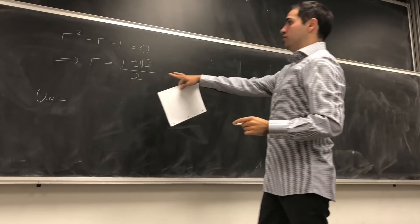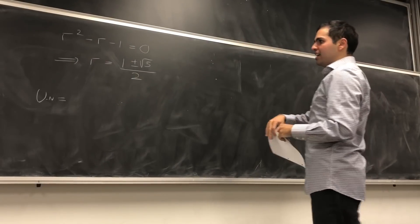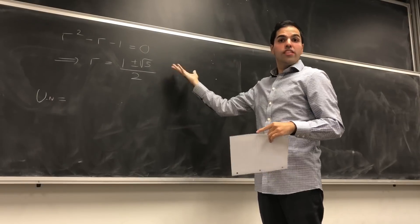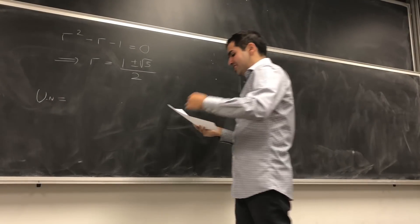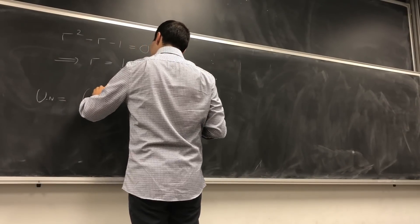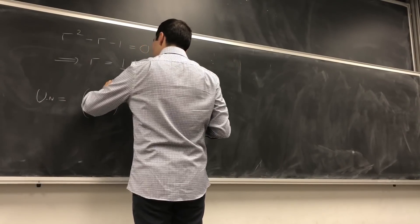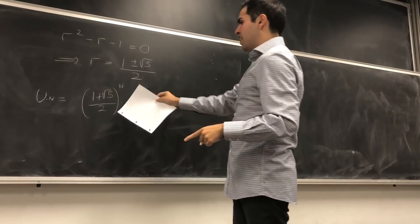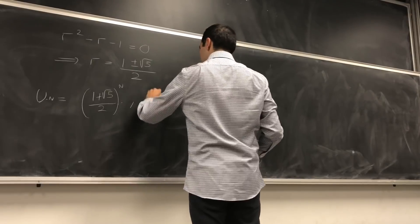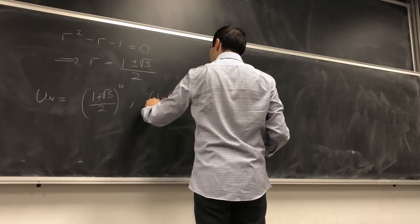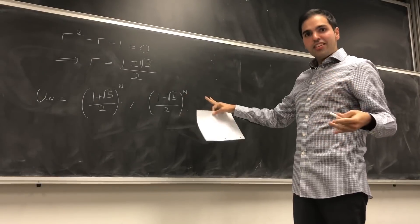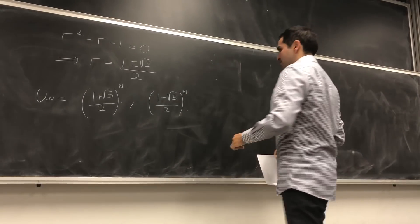This tells us that if r equals those two values, r to the n solves the difference equation. So if you take u_n to be ((1 + √5)/2) to the n and ((1 − √5)/2) to the n, both of those solve the Fibonacci relation.